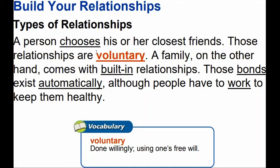A person chooses his or her closest friends. Those relationships are voluntary — done willingly, using one's free will. A family, on the other hand, comes with built-in relationships. That means that relationship is not voluntary; those bonds exist automatically, although people have to work to keep them healthy.